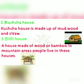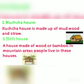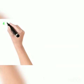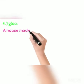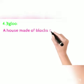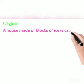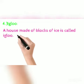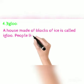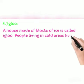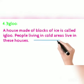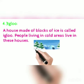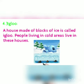What is an igloo? A house made of blocks of ice is called an igloo. People living in cold areas live in these houses. Igloos are found in colder regions.